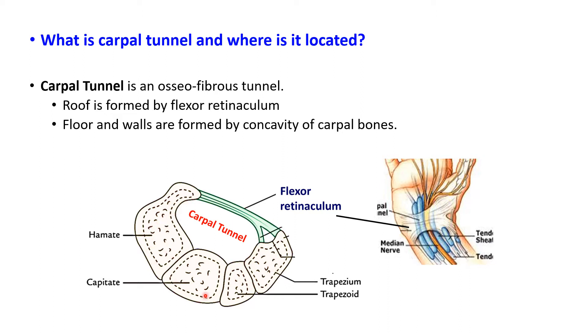The floor and walls of the carpal tunnel are formed by the concavity of the carpal bones.